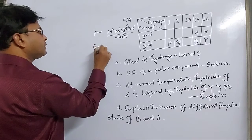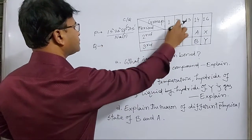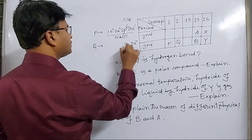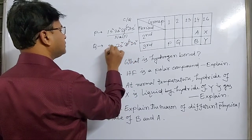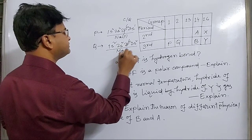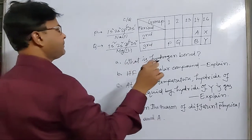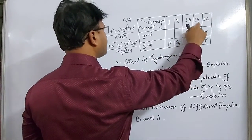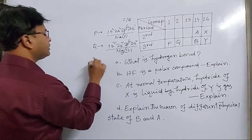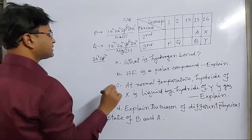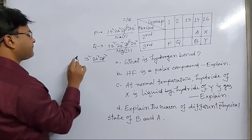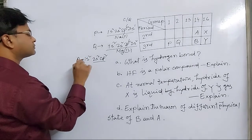Q indicates 2 electrons in the third shell, giving the configuration 1s2, 2s2, 2p6, 3s2 — total 12 electrons — so Q is magnesium. And A has 4 electrons at the second energy layer: 1s2, 2s2, 2p2 — total 6 electrons — so A is carbon.